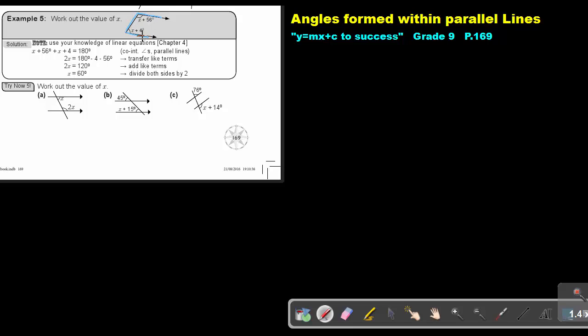These co-interior angles will be supplementary. They will add up to 180 degrees. So I can form an equation. I can say X + 56 + X + 4 = 180 degrees because it's co-interior angles of parallel lines.